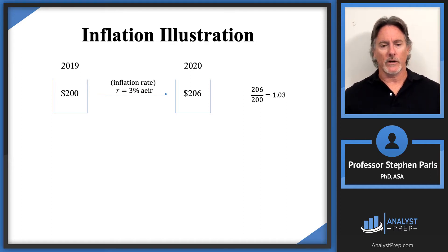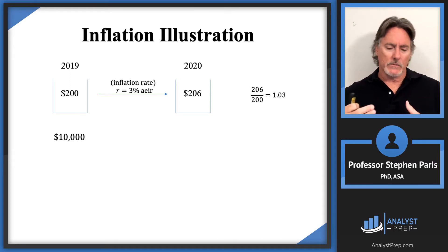Going back to thinking of the 200 and 206 as prices for a basket of groceries in 2019 and 2020, let's say at the beginning of 2019 you have $10,000 in a separate investment account.